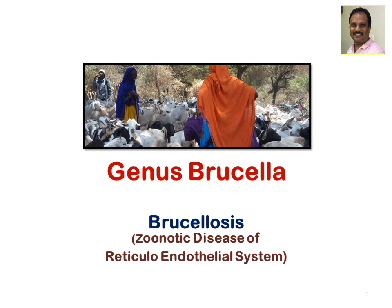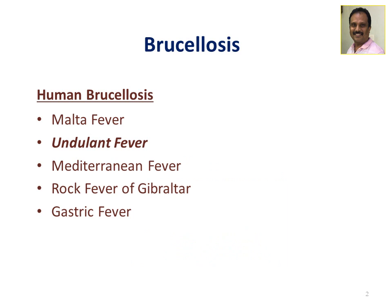Today I am going to talk on the genus Brucella, which is the causative agent for the disease brucellosis. This is a very important zoonotic disease of human beings as well as animals, which involves the reticuloendothelial system. Brucellosis caused by Brucella species has got different names in human beings as well as in animals.